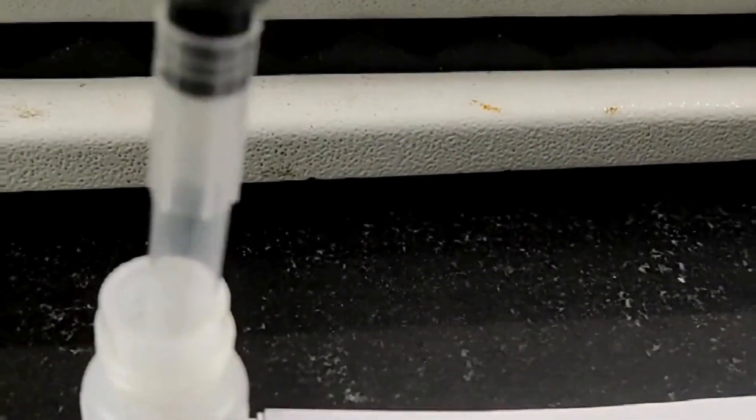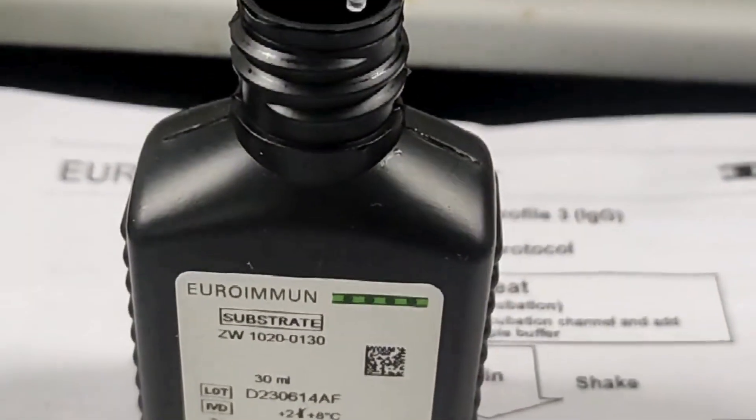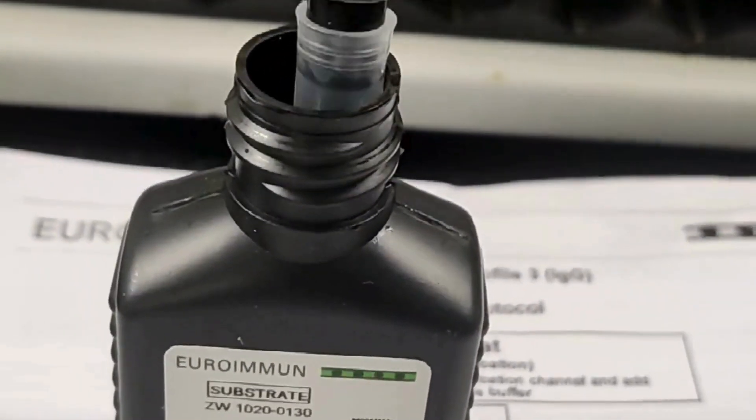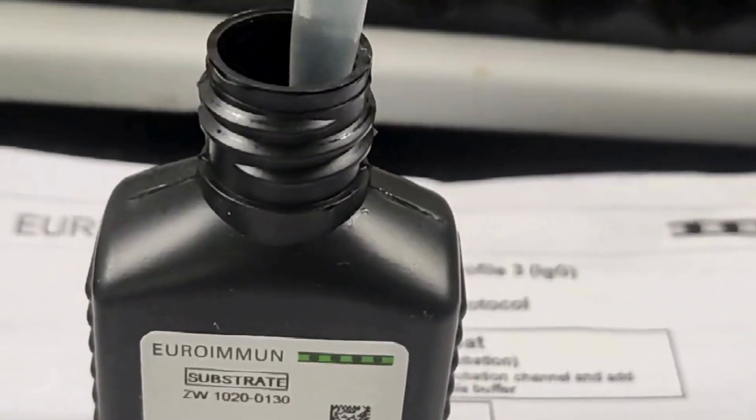After that, again we do three times washing with our wash buffer. Now our important steps commence which is applying substrate or stop solution. This substrate is responsible for appearance of bands on test strips if antibody is present. So we dispense 1500 microliter of substrate into test strips and leave it for 10 minutes only.